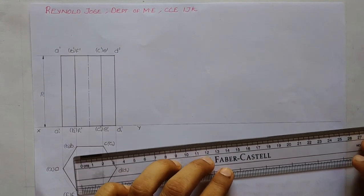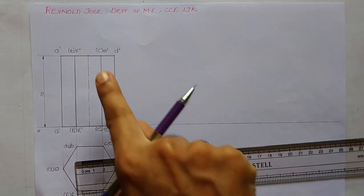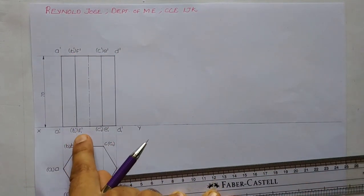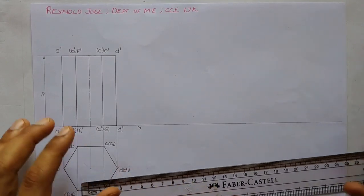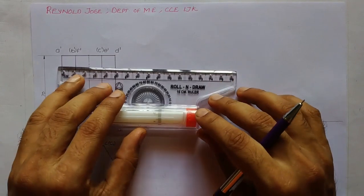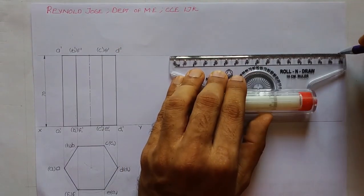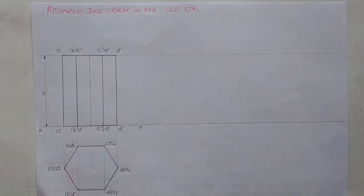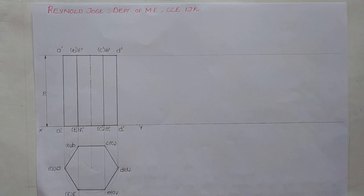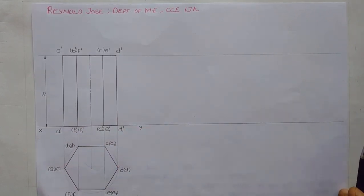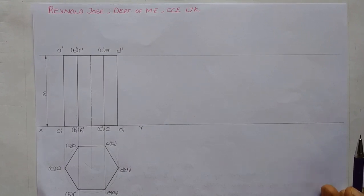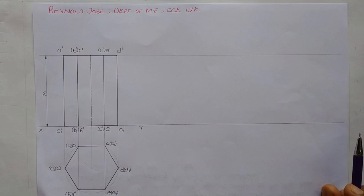To draw the development of the lateral surface, we extend a straight line parallel to the XY line from the top surface. The base edge length is 25mm, so when we unfold this solid, the lateral surface will be a rectangle with a height of 70mm and a width of 25 × 6 = 150mm. So 150mm is the total stretch-out length of the hexagonal prism's lateral surface.